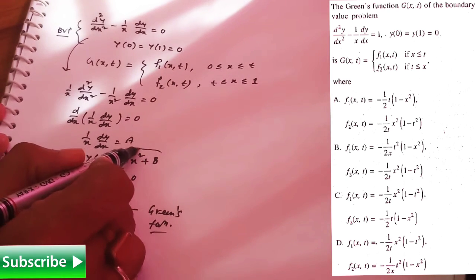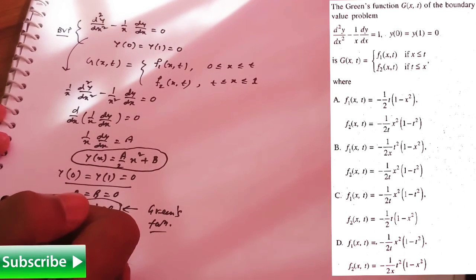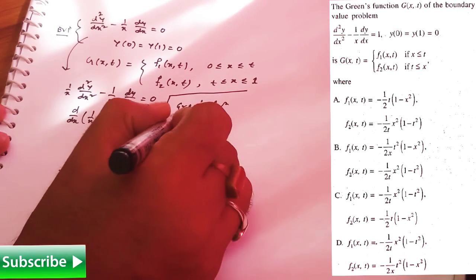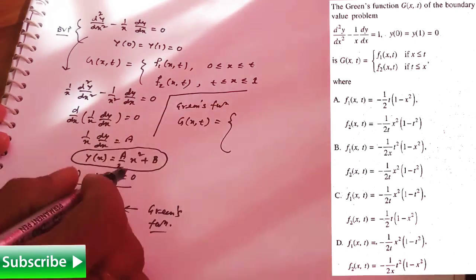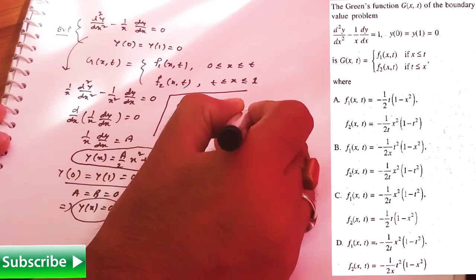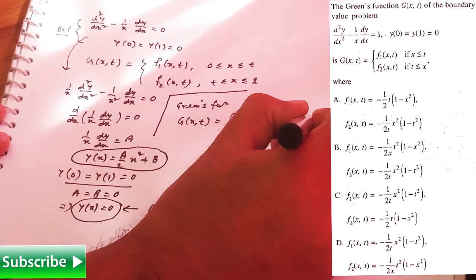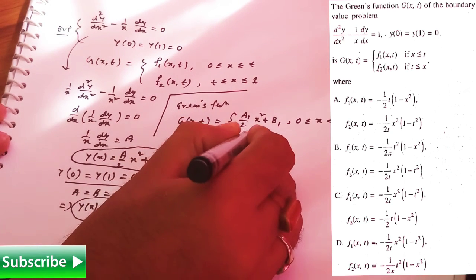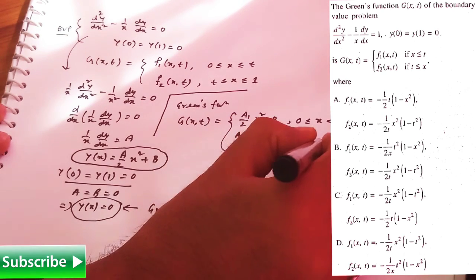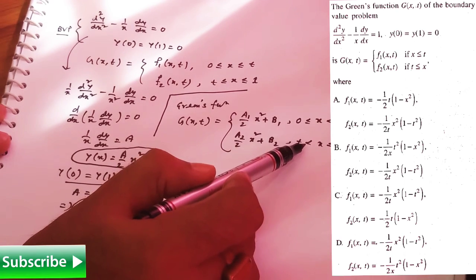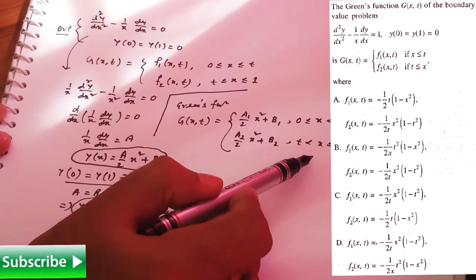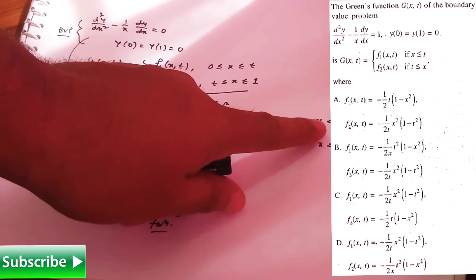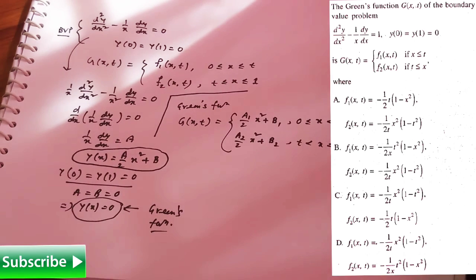To construct Green's function you need to use the general expression for y. The Green's function g(x,t) takes the piecewise form: (a1/2)x² + b1 for 0 ≤ x < t, and (a2/2)x² + b2 for t < x ≤ 1. Note it is strictly less than in both intervals — for the reason behind this, watch the previous video.